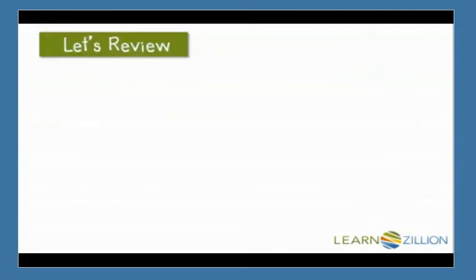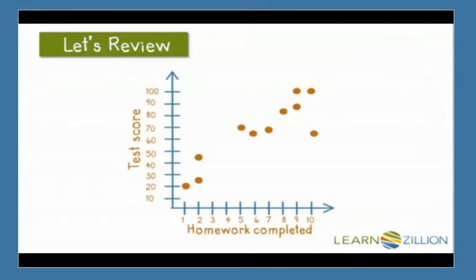Let's review scatterplots. A scatterplot is a pictorial representation of two pieces of data that have been collected from the same source. In this scatterplot, the x-axis represents the number of homework assignments completed out of 10 possible assignments, while the y-axis represents the test score earned by this same student.